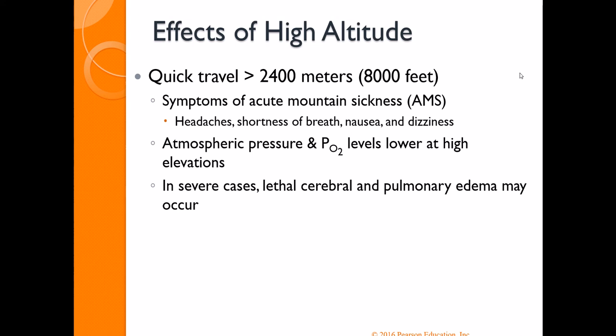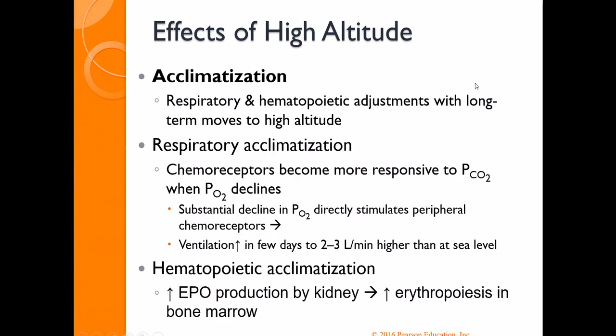The very last thing we'll talk about is what happens when we go to high altitude. If we go very quickly above 8,000 feet, you end up with what they call acute mountain sickness — headaches, shortness of breath, dizziness, and nausea — because the partial pressure of oxygen is so much lower at higher altitudes that you're not getting enough oxygen. If this were to continue, you could actually end up with edema in your lungs or your brain because your body just isn't getting enough oxygen.